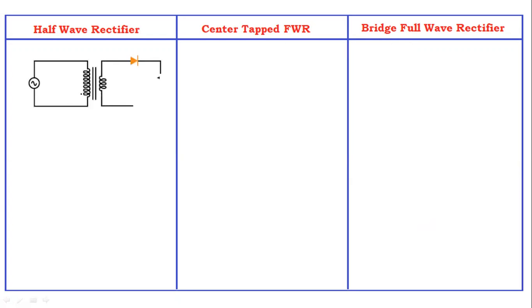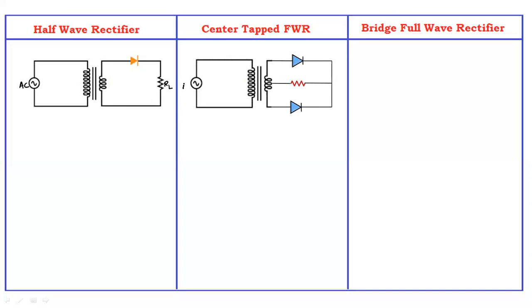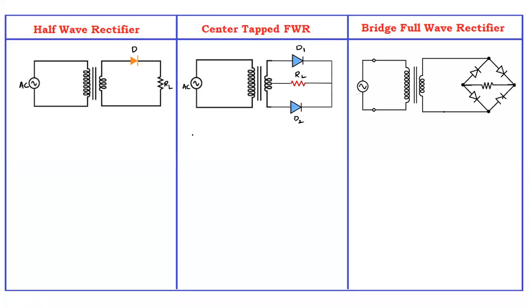This is the half wave rectifier circuit diagram, which has only one diode and a load resistance. The input voltage is AC. In the center tapped full wave rectifier, we also give AC supply, but here there are two diodes — diode D1 and diode D2 — and a load resistance. In the bridge full wave rectifier, there are four diodes.